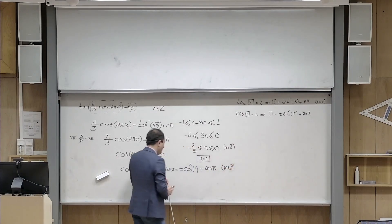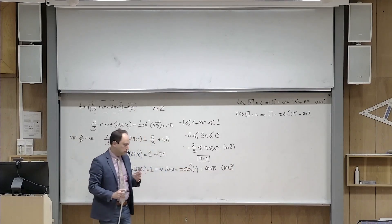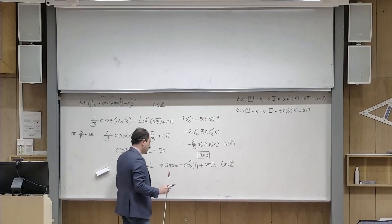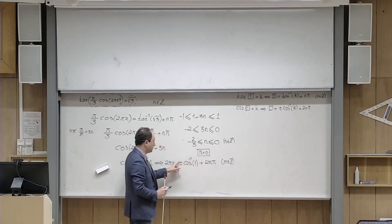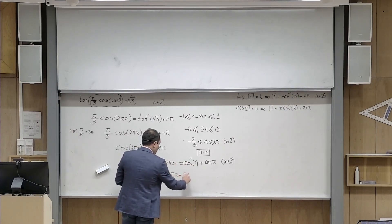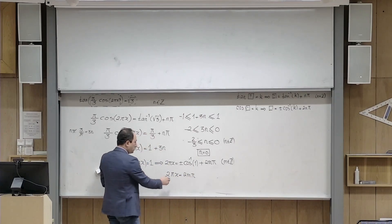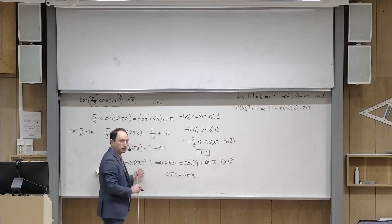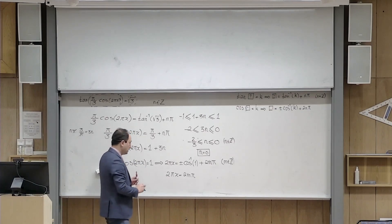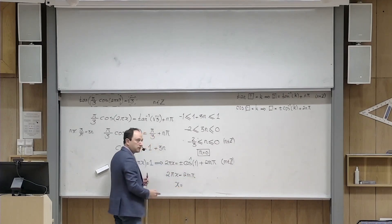And then what happens, hopefully you know that cosine inverse of 1 is 0 radians. Plus minus 0 is just 0. So what is left for me is that 2 pi x is 2 m pi. But my goal is to make x alone, so I divide everything by 2 pi. Then it becomes x equals to m.